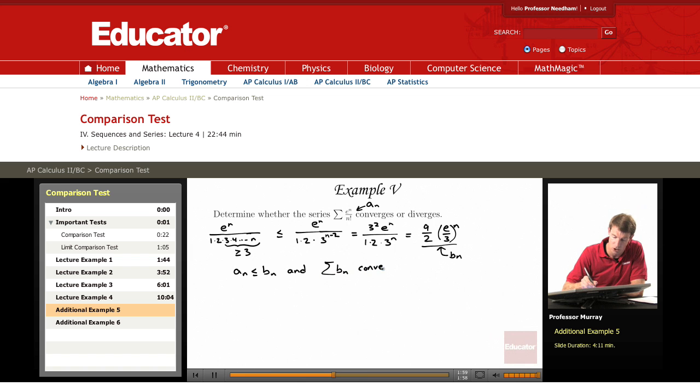Why does it converge? Because bn is just a constant, 9 halves times e over 3 to the n. And so when you have a constant raised to the n power, it's a geometric series.